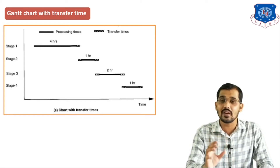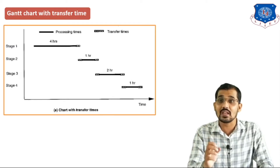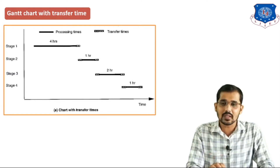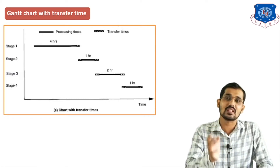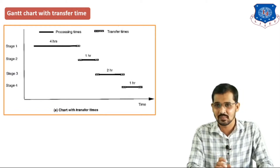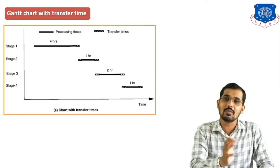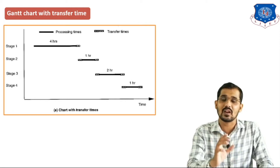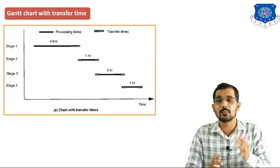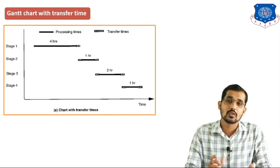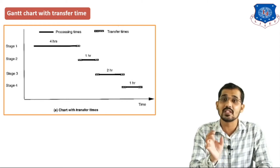Whatever the time required for each stage is the processing time. For example, the reaction is carried out at 80 degrees Celsius for four hours in the reactor. The outlet stream goes to the mixer for one hour, then to the centrifuge to separate solid from liquid for two hours, and finally transferred to the dryer for one hour. Transfer time is the time required to transfer material from one stage to the next stage, represented by a dotted line in this figure.